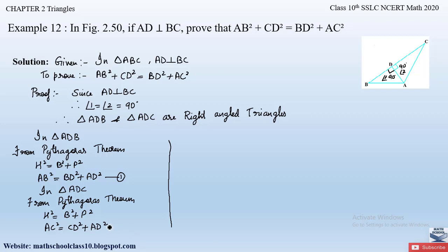Observing what we have to prove — AB² + CD² = BD² + AC² — we have AB² from equation 1 and AC² from equation 2, but we need the value of CD². From equation 2, transposing AD² to the left-hand side: CD² = AC² − AD². Let this be equation 3.